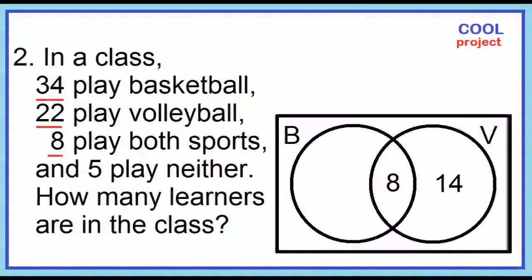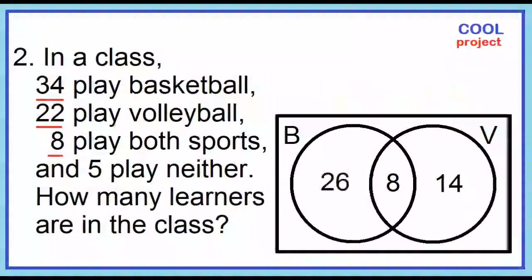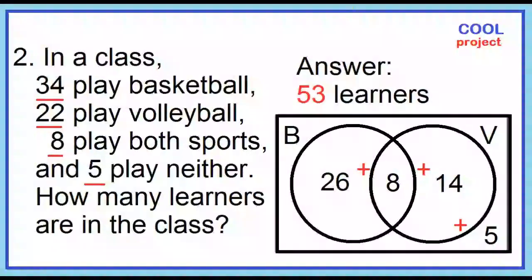Next, 34 play basketball. Since we already have 8, 34 minus 8 equals 26. Place 26 in circle B. Next, 5 play neither. Place 5 outside the two circles, but inside the rectangle. Let's add the number of elements of the universal set: 26 plus 8 plus 14 plus 5 equals 53. The answer is 53 learners.